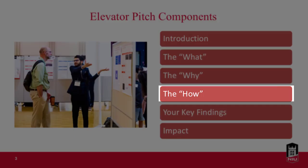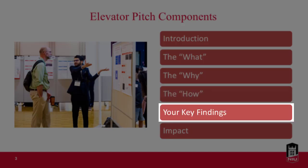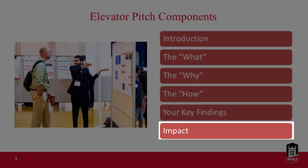The how: explanation of the process or method you chose to address the question or solve the problem. Your key findings, preliminary findings, or outcomes — what you found out or have learned up to this point in the project. And the impact: in what way has your project made an impact? How can the findings or outcomes of your project be used?